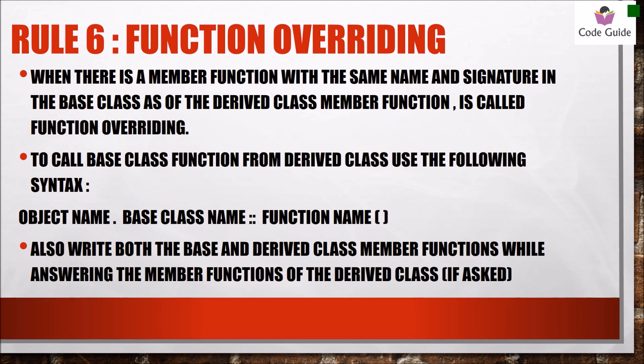Rule number six is function overriding. Function overriding occurs when a function has the same name and same parameters in both the base and derived class. When the derived class has a function with the same name as the base class, this is function overriding. To call the base class function, you mention the base class name followed by the scope resolution operator and the function name. You can call it through the object name, or if calling inside the derived class, write the base class name directly. In answers, write both function names with their respective class names.